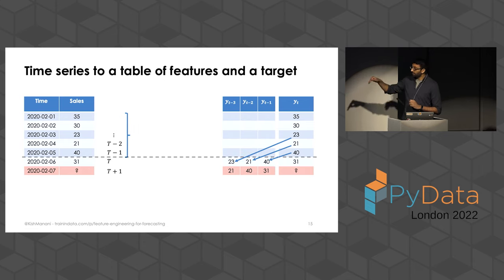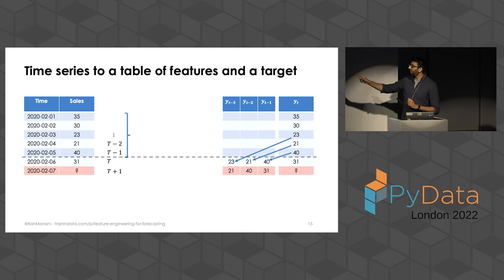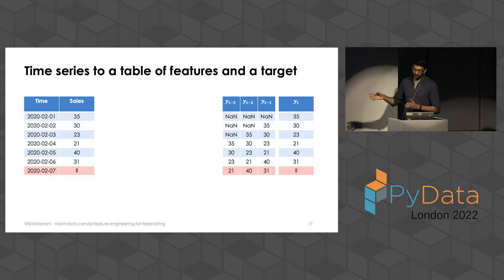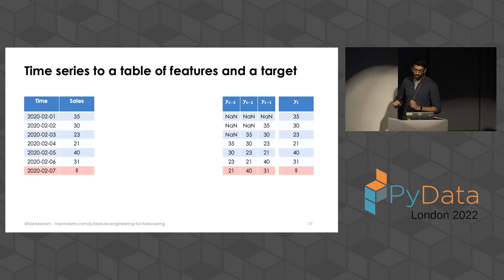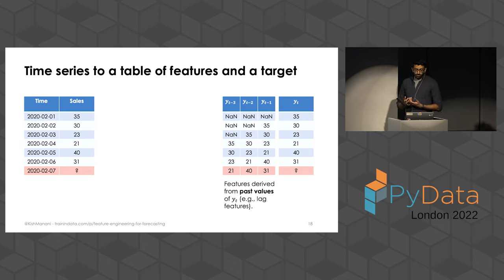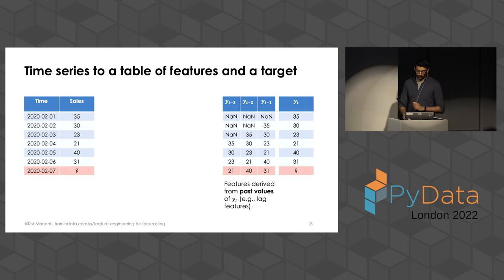You do this for each value of the target. So if you want to predict the target variable at time T, you'll use the value at T minus one, minus two, and so on. That way you create a set of feature vectors associated with the target variable. Obviously as you get towards the end of the time series you'll get some missing data, because there is a finite start. This means you'll have features derived from past values of the time series itself — I've shown you some very simple ones, so-called lag features — and I'll show you some slightly more complicated ones later.